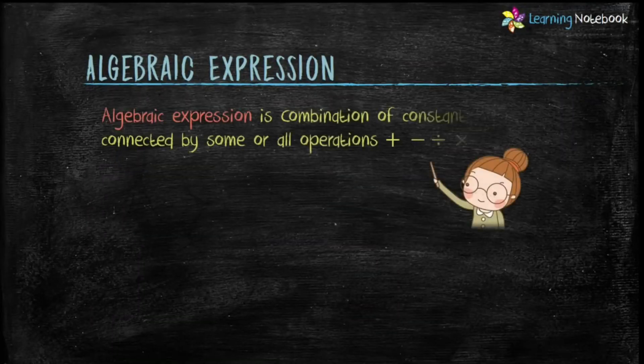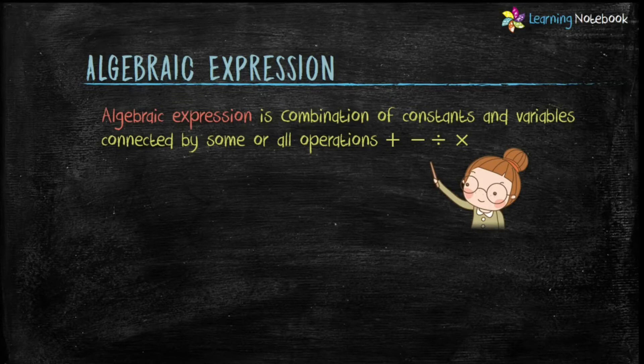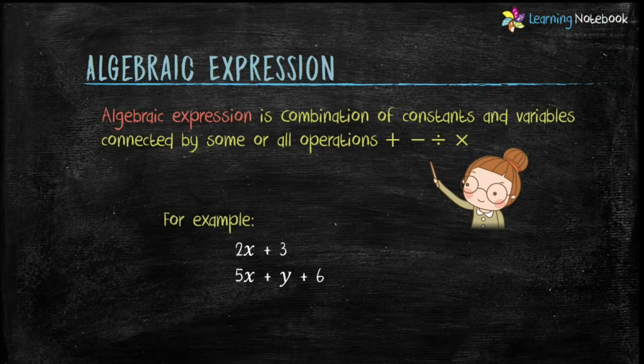Next is algebraic expression. An algebraic expression is a combination of constants and variables connected by some or all mathematical operations — plus, minus, divide, or multiplication. For example, 2x plus 3, and 5x plus y plus 6. These two are algebraic expressions.